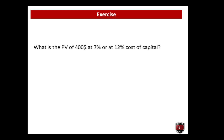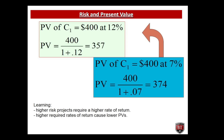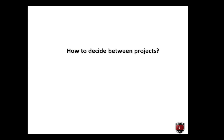Now we will see an exercise. What is the present value of $400 at 7% or 12% cost of capital? At 12% cost of capital, the present value is $357. At 7% cost of capital, it is $374. What can we learn from this difference? The answer is: higher risk projects require a higher rate of return.